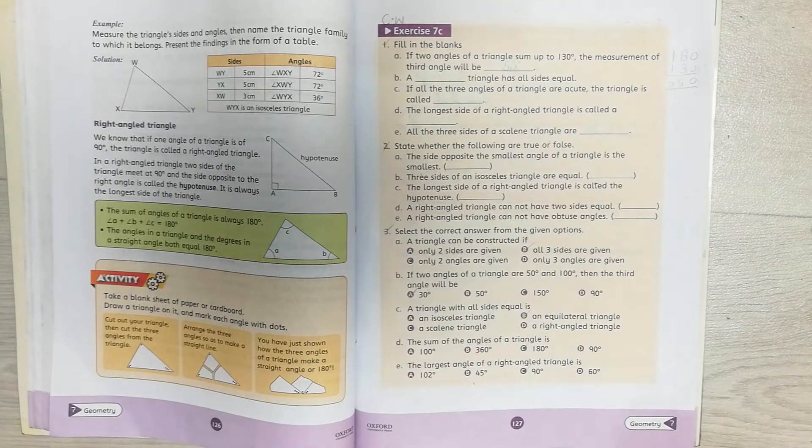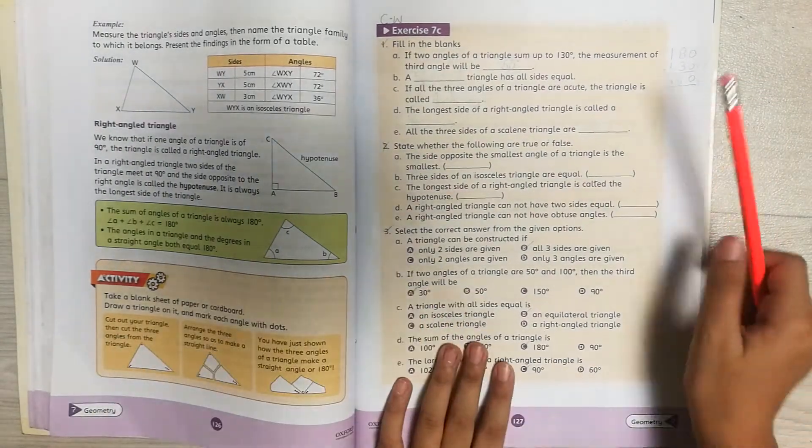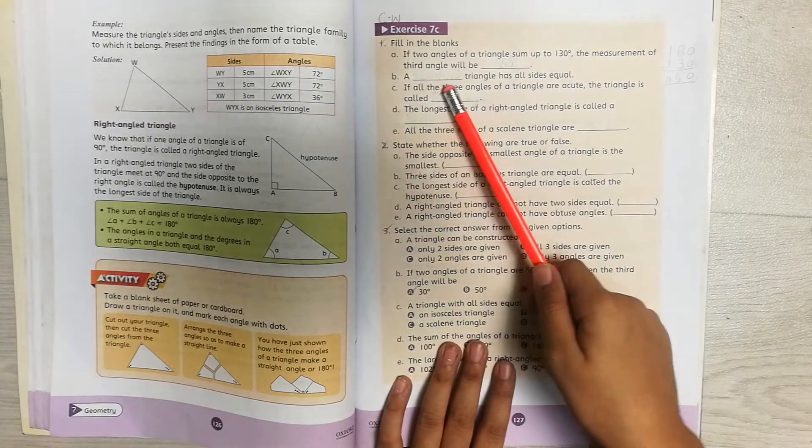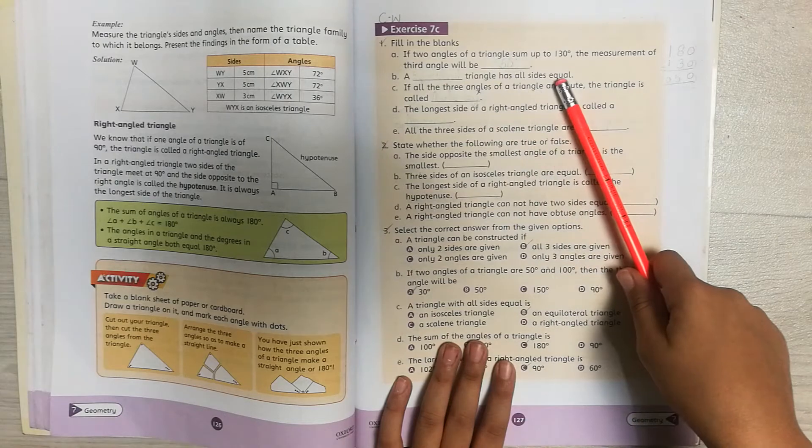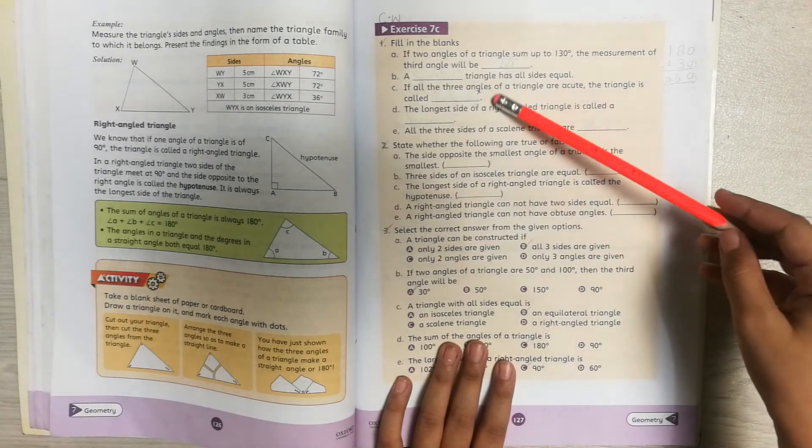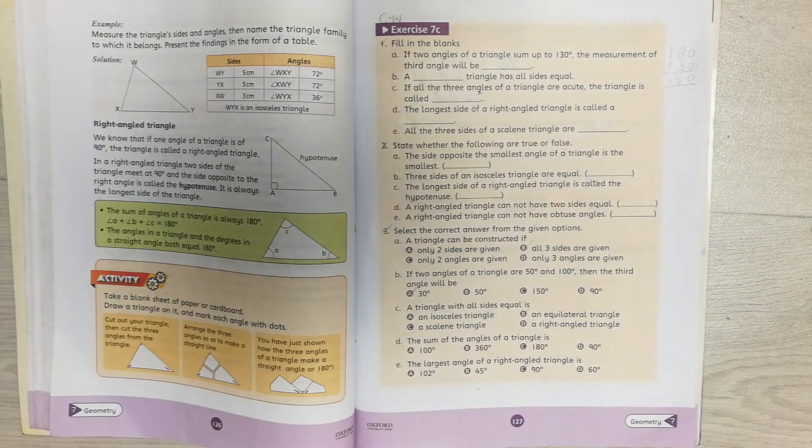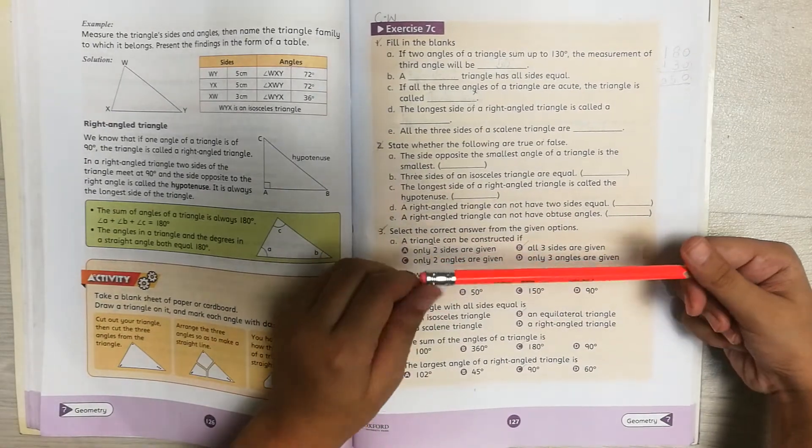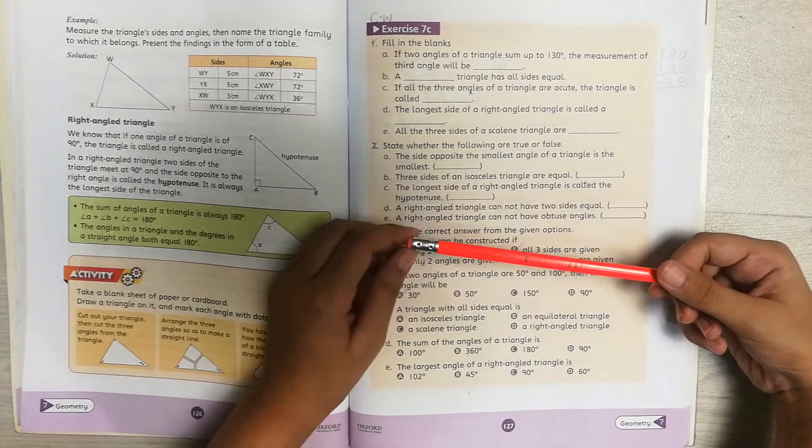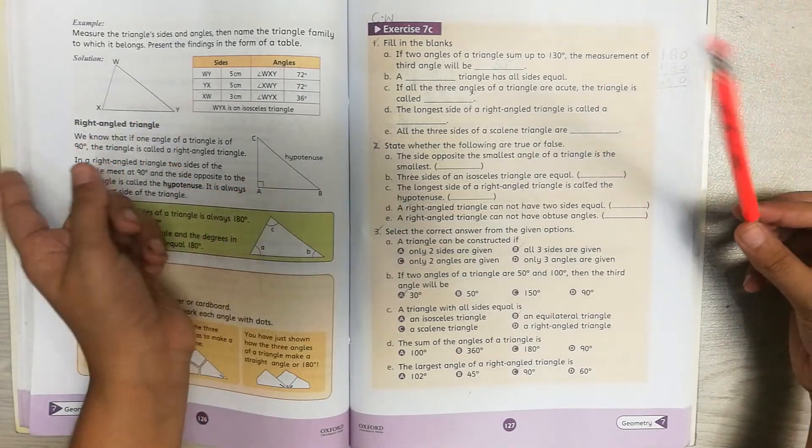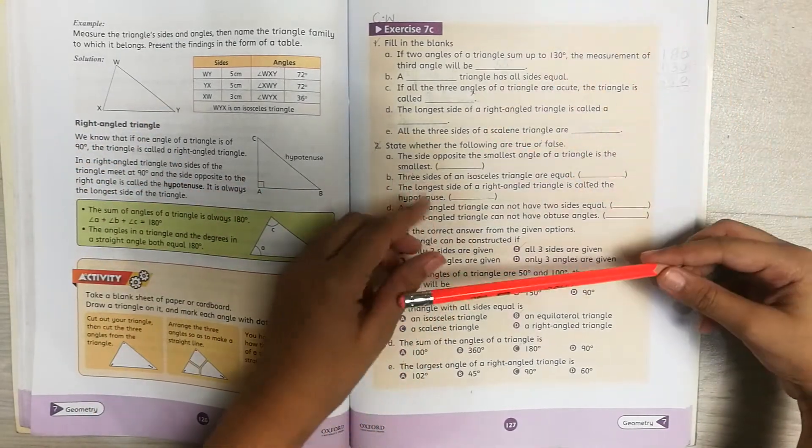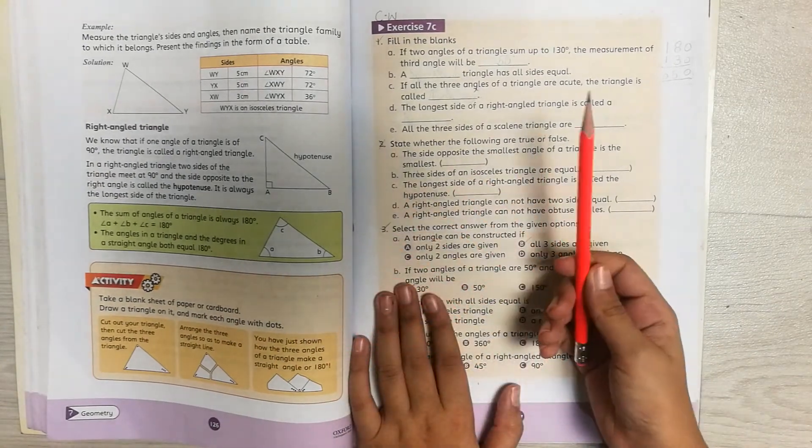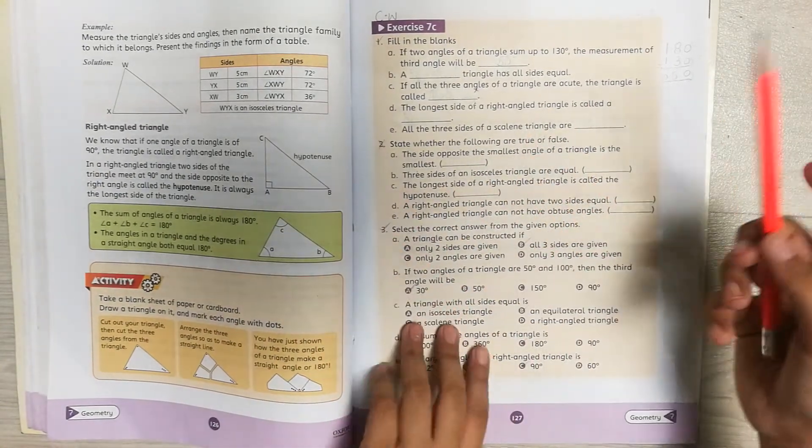Now let's go to part B. A blank triangle has all sides equal. So yesterday I told you in a video about the sides. The triangle with all sides equal is equilateral. So the answer will be equilateral.